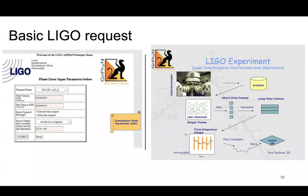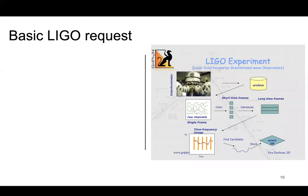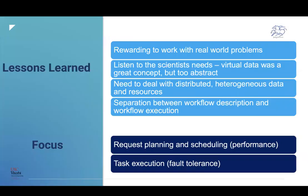After SC, we showed this to our colleagues at LIGO, and they didn't particularly like it. The reason is they didn't want to think about a web interface — what they really liked was looking at this image on the right showing the expansion of the request, where you see the entire workflow and all the steps involved to get down to the science. So we dropped the AI planning and started looking directly at enabling users to compose these workflows the way they wanted them to look.